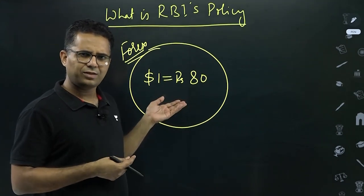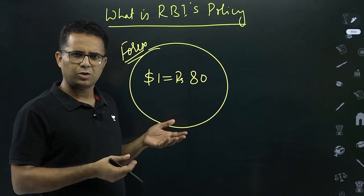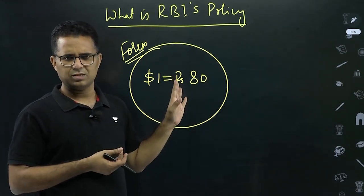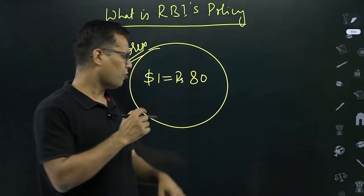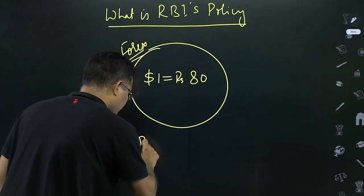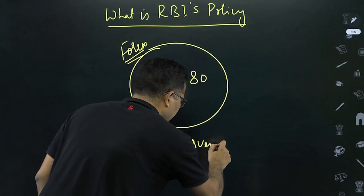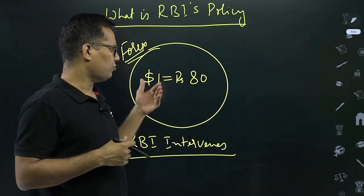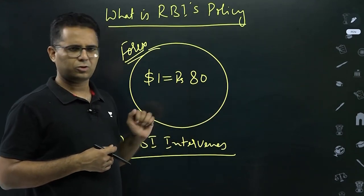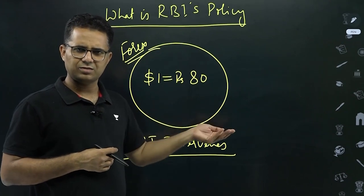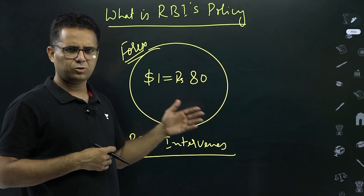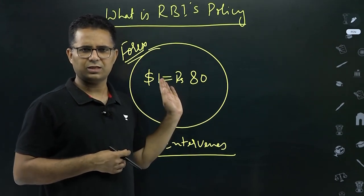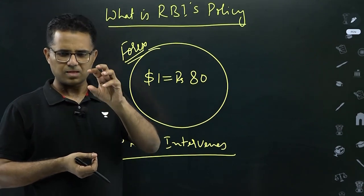RBI has left the rupee to be decided by the market, but if there is too much volatility, RBI intervenes. How does RBI intervene? RBI asks banks to sell or purchase dollars. RBI generally does not do this directly. This time when rupee started depreciating and touched 80, RBI asked banks to start selling dollars in the forex market. When banks sold dollars, supply of dollars increased, rupee started appreciating — but just to reduce the volatility.